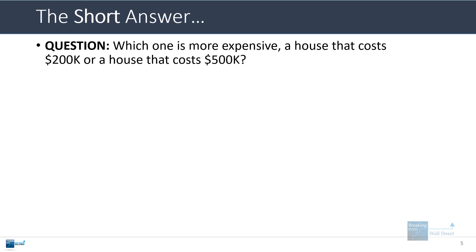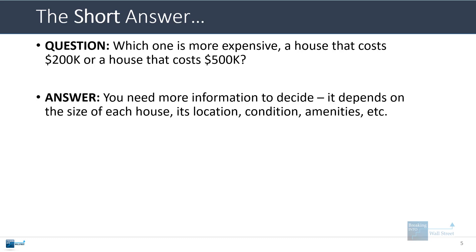Think about buying a house where you're considering two houses — one that costs $200,000 and one that costs $500,000. The question is: which one is more expensive? On the surface, the $500,000 one seems more expensive, but we need more information because it depends on how big each one is, their locations, conditions, ages, amenities, and other factors.